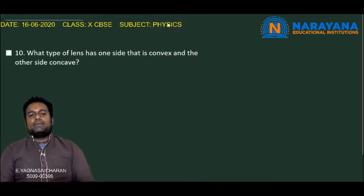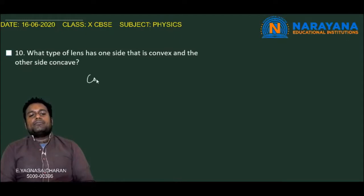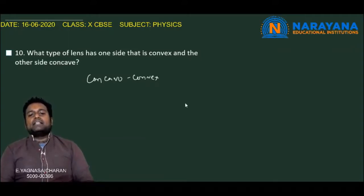The tenth question: What type of lens has one side that is convex and the other side that is concave? If one part of the lens is convex and the other part is concave, then the lens is called a concavo-convex lens. One side is concave and the other side is convex, so that lens is concavo-convex.